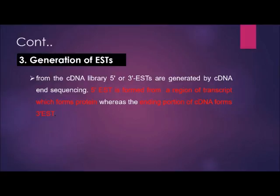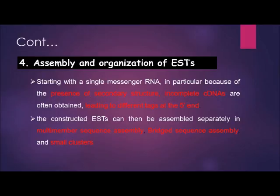The third step is the generation of the EST itself. There are two types of EST: the 5' end and the 3' end, generated from different cDNA sequencing reactions. A region of the transcribed cDNA that encodes protein generates 5' EST, while the end portion of cDNA generates 3' EST. The last step is the assembly and organization of EST. Due to secondary structures, complete cDNA are often not obtained, leading to different tags of the 5' end. The resulting EST can be assembled into multi-member sequence assemblies, bridge sequence assemblies, and small clusters.